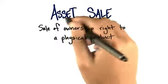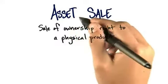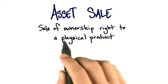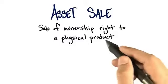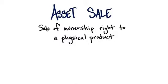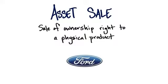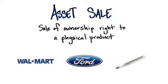Another type of sale is an actual asset sale, a direct sale. This is the sale of ownership of the right to a physical product. In a physical channel, some best examples are buying cars — Ford or General Motors or Nissan — or going into a Walmart and buying products in their massive stores, or going to your local hardware store and buying some thermometers.